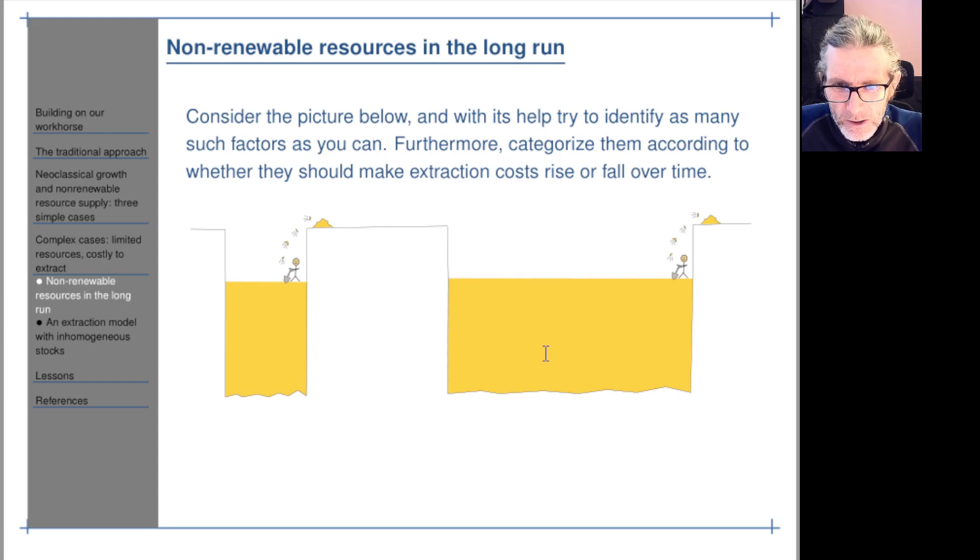We've got somebody working with the help of some capital - the shovel - to extract resources. Clearly, if the wage were to go up, or the price of capital were to go up, that would push extraction costs up. On the other hand, if the worker got more productive, or if they got more productive capital, so the worker-capital combination got more productive, that would push the price down.